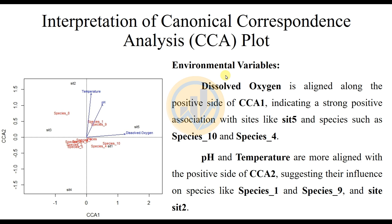The environmental variables are discussed first. Dissolved Oxygen is aligned along the positive side of CCA1, indicating a strong positive association with sites like Site 5 and species such as Species 10 and Species 4. pH and temperature are more aligned with the positive side of CCA2, suggesting their influence on species like Species 1 and Species 9.